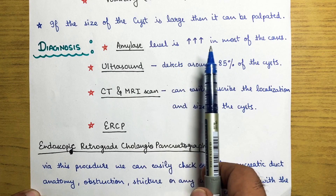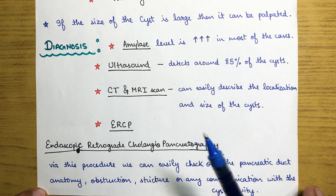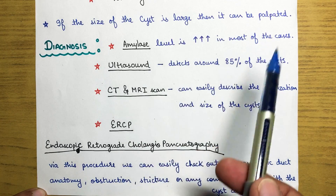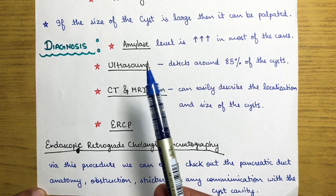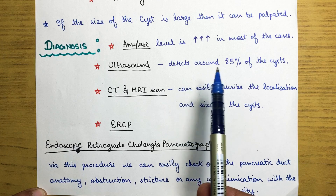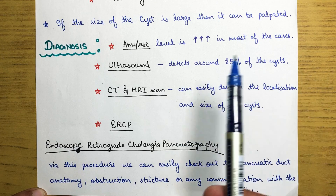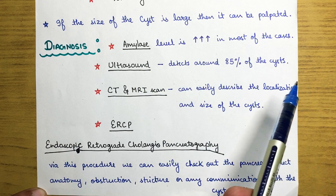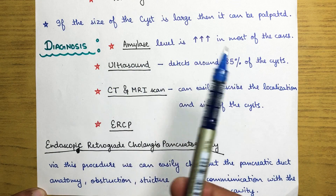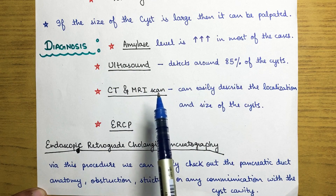Amylase level is usually high in most cases of pancreatic cysts. If that is inconclusive, we can go for ultrasound, which detects about 85 percent of cysts — ultrasound is a very good technique. If that also doesn't help, we can go for CT or MRI scan.